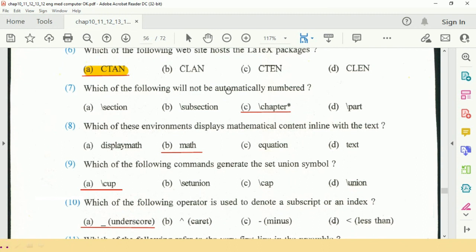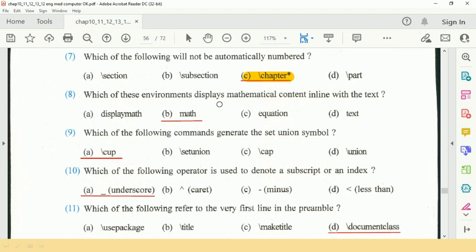of the following will not be automatically numbered? So slash chapter asterisk. Which of the environment displays mathematical content inline with the text? So math.